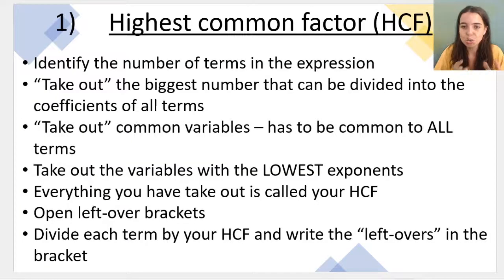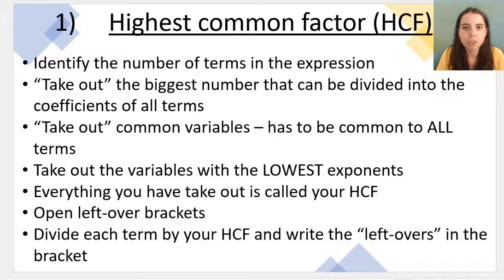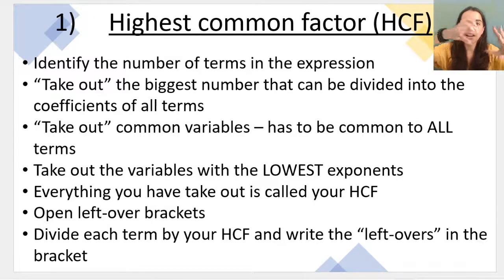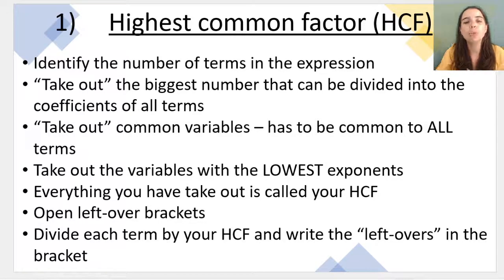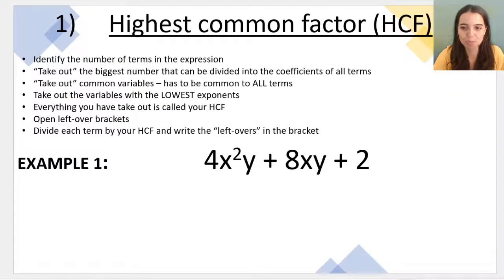After finding the biggest number that divides into all coefficients, we take out common variables — and again, 'common' means present in all terms. For example, if you have x, x squared, and x cubed, you take out x with the lowest exponent. Everything you take out is called your highest common factor, which goes outside the brackets. Then you open your leftover bracket and divide each term by the highest common factor. It makes more sense to go through this with an example.